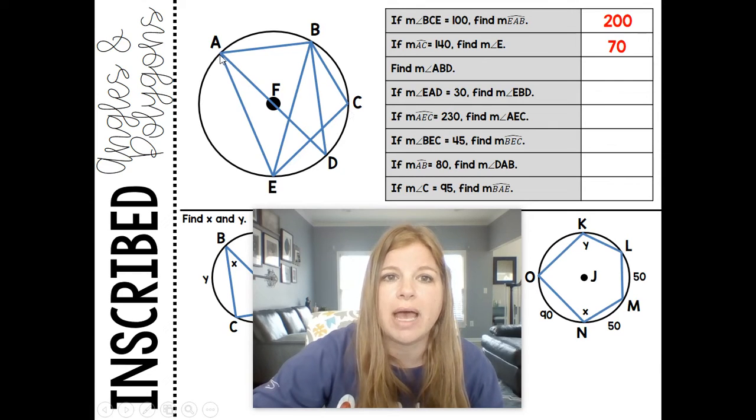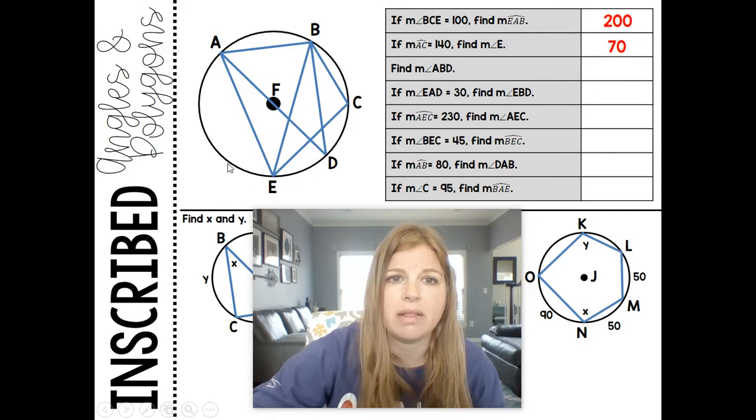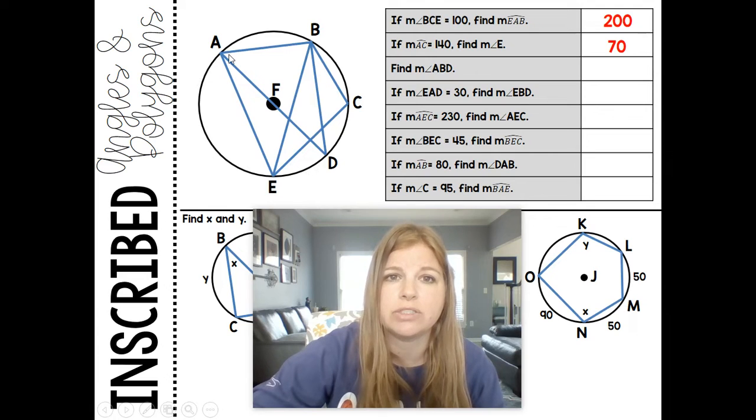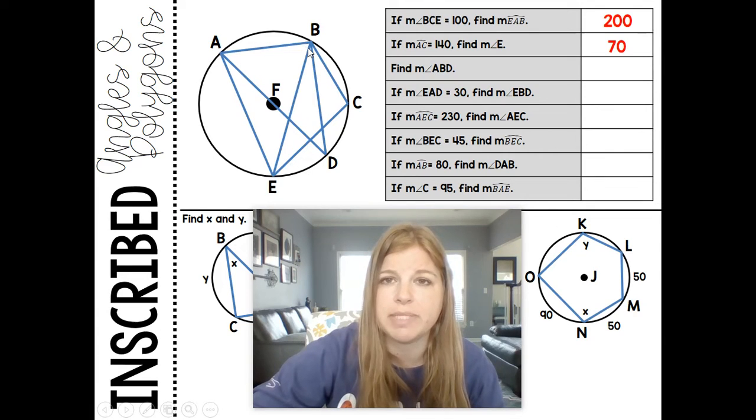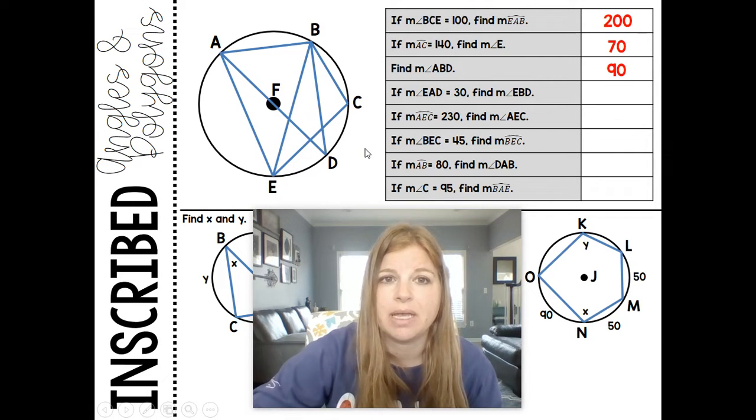Find the measure of ABD. Notice this angle opens up to a diameter, and the diameter is a semicircle. If the diameter is a semicircle of 180 degrees, then this arc of 180 degrees is directly opposite this inscribed angle, which means angle ABD is half of it, which is 90.